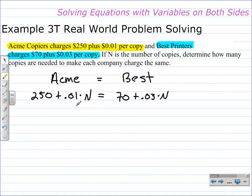To solve this equation, I'm first going to subtract .01n from both sides. .01n and the minus .01n becomes 0 on the left, leaving 250. On the right, we have 70 plus .03n. Or I'm sorry, that should be .02n, because we subtracted .01n from both sides.